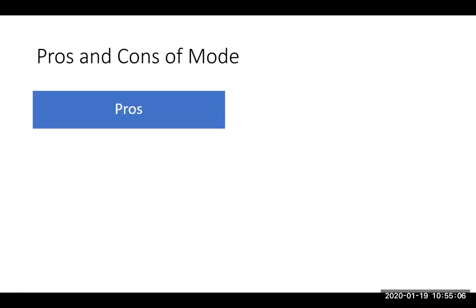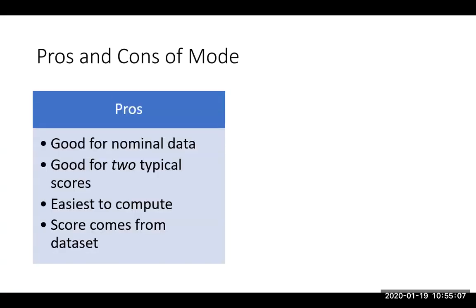Now let's talk about the pros and cons of the mode. First pro: it works for nominal data. Nominal data are words without order — things like your religion, ethnicity, or major. You can have a mode for nominal data, which is important because otherwise we may not be able to summarize nominal data with any measure of central tendency at all.